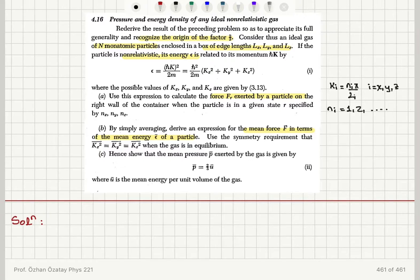Hence show that the mean pressure exerted by the gas is P̄ = (2/3)Ū, where Ū is the mean energy per unit volume of the gas.